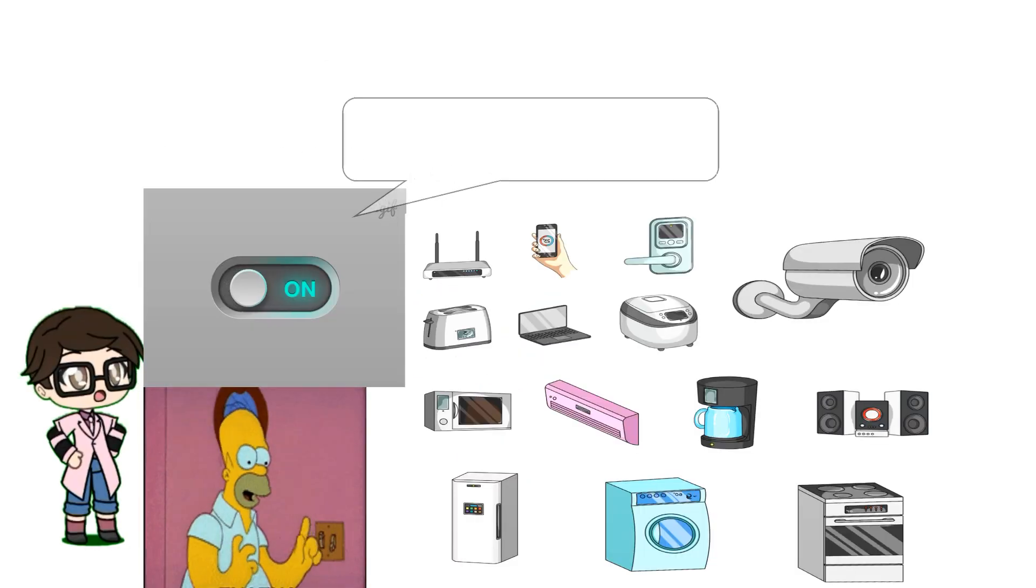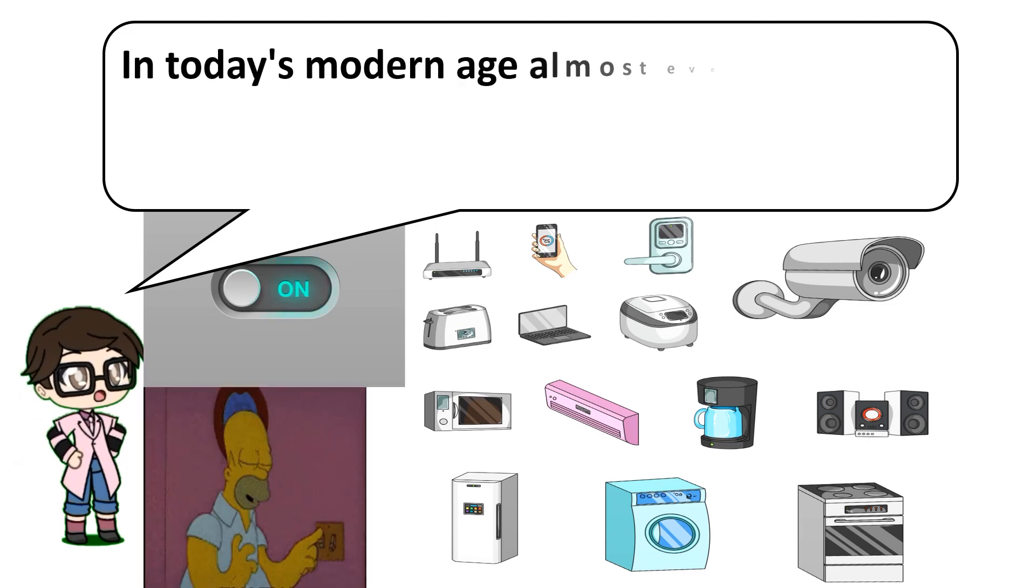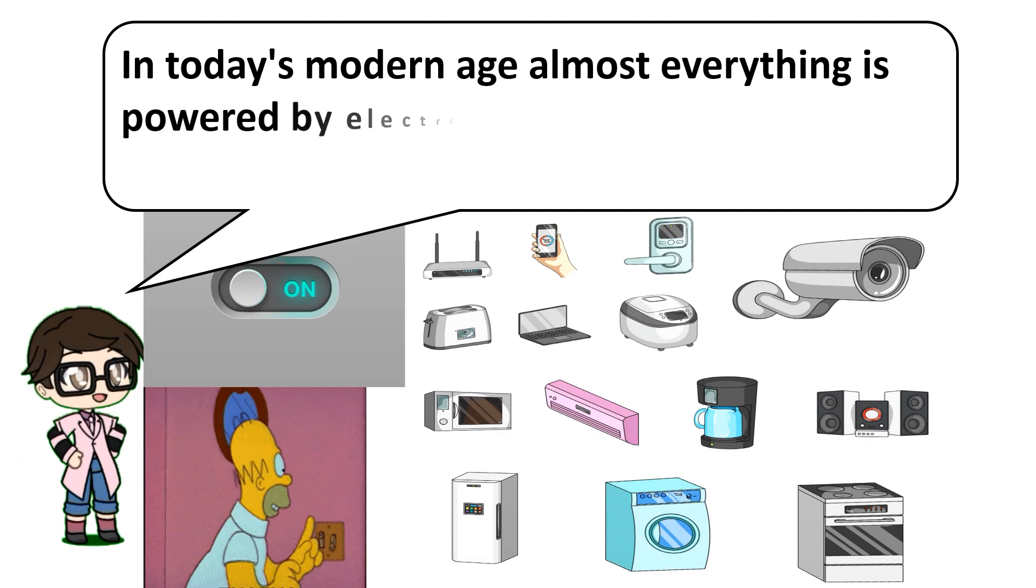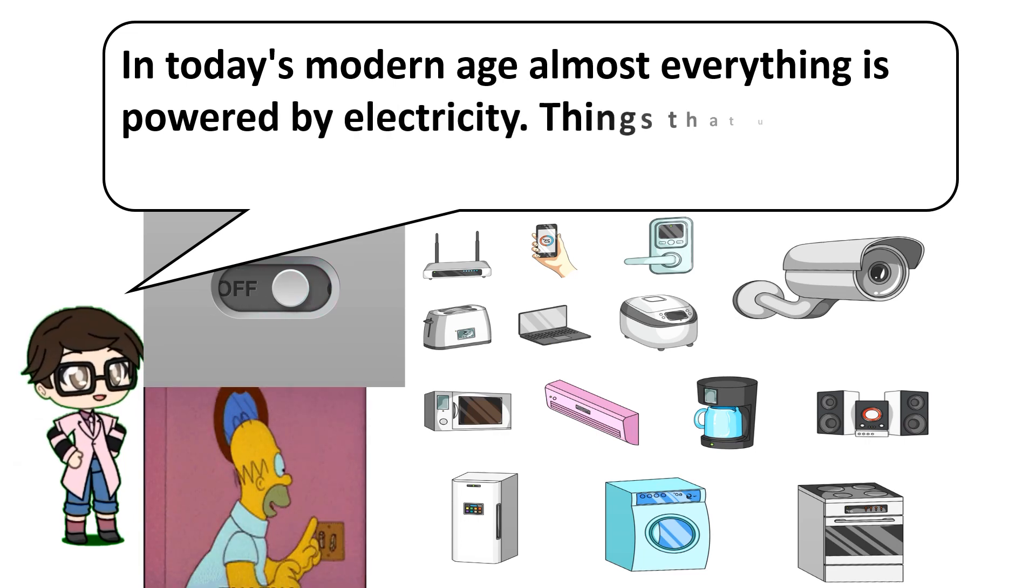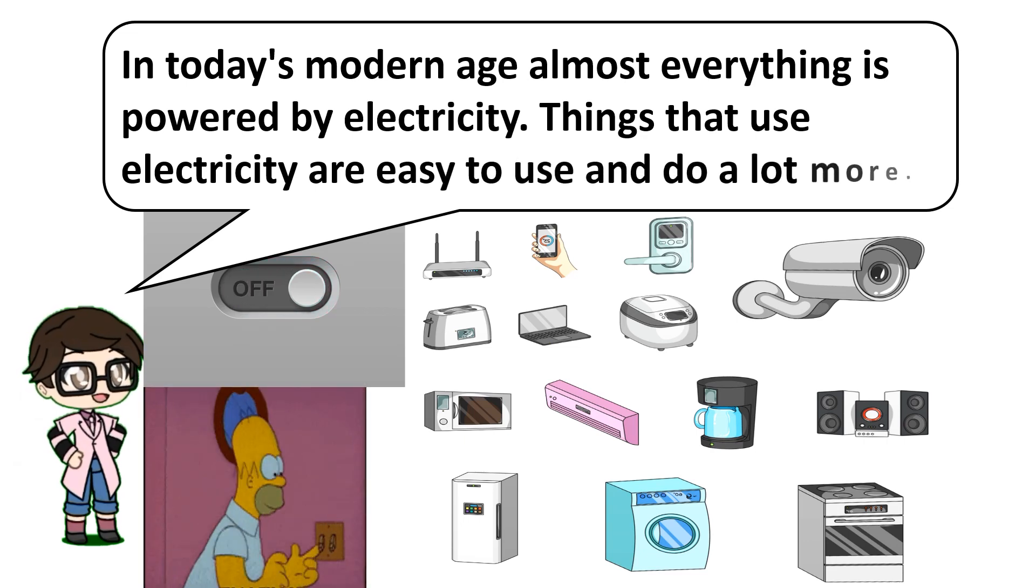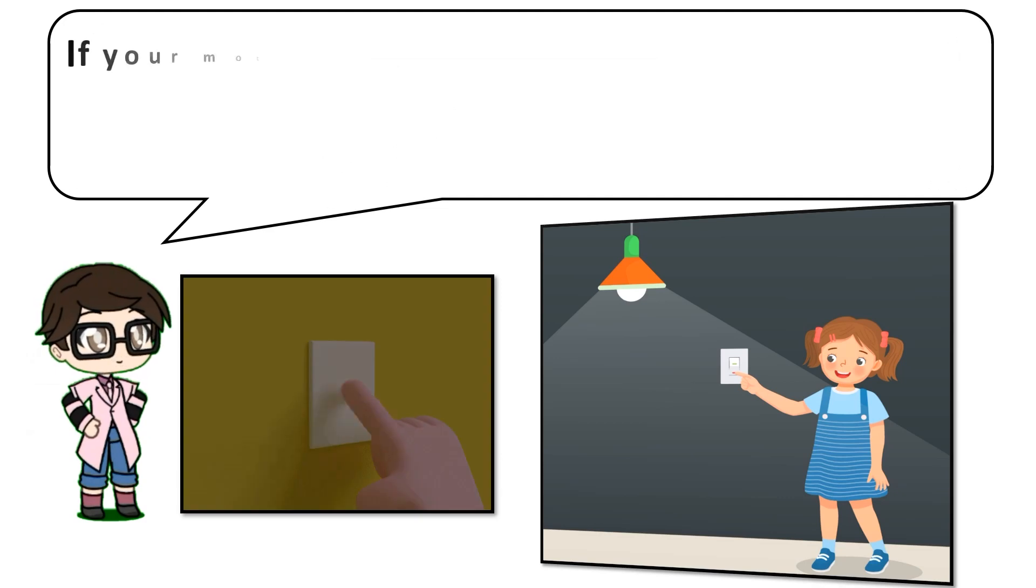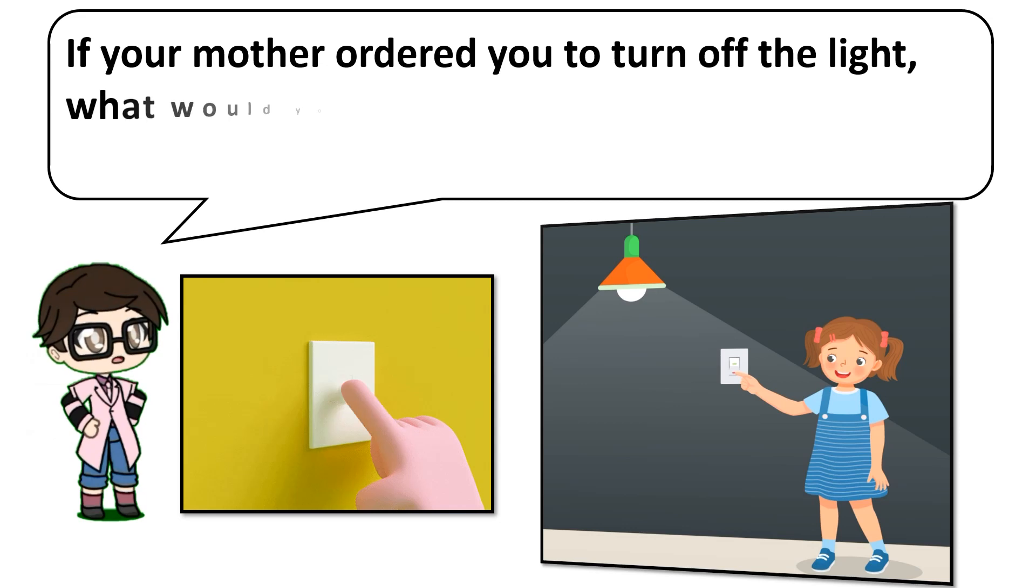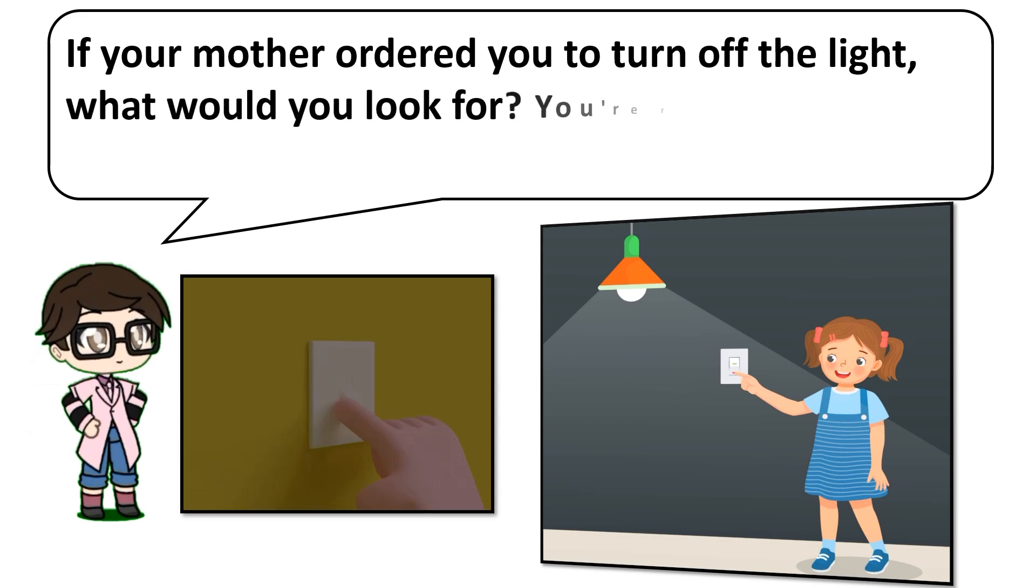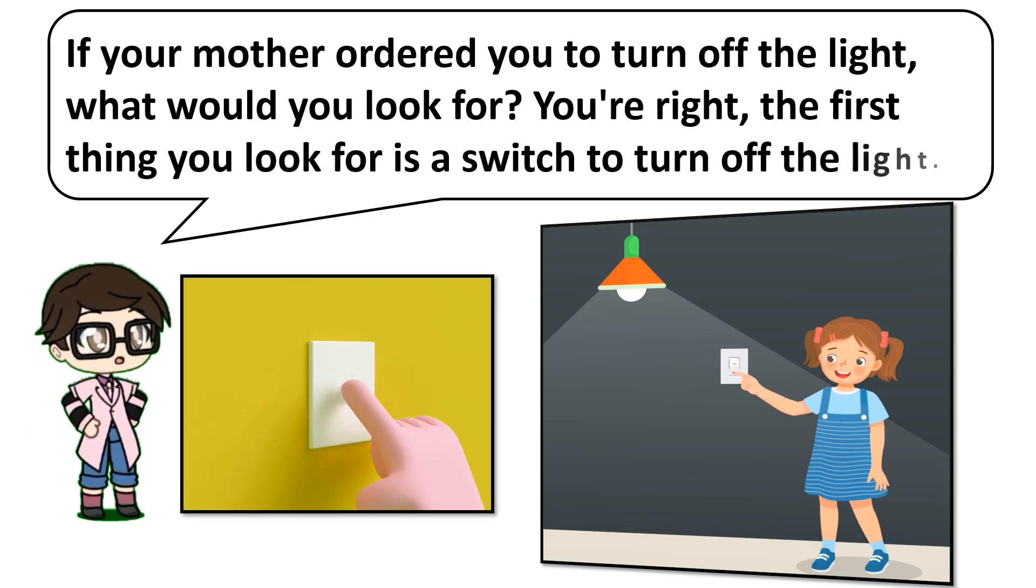In today's modern age, almost everything is powered by electricity. Things that use electricity are easy to use and do a lot more. If your mother ordered you to turn off the light, what would you look for? You are right, the first thing you look for is a switch to turn off the light.